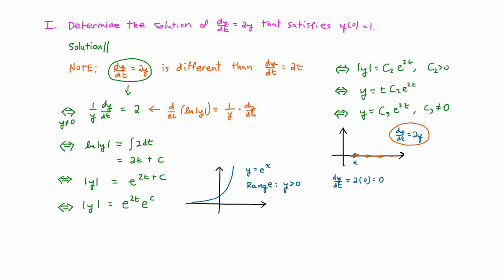This suggests that if the solution touches the t-axis at any point, then the graph of the solution will be horizontal. Specifically, the solution will be the constant function y equals zero.